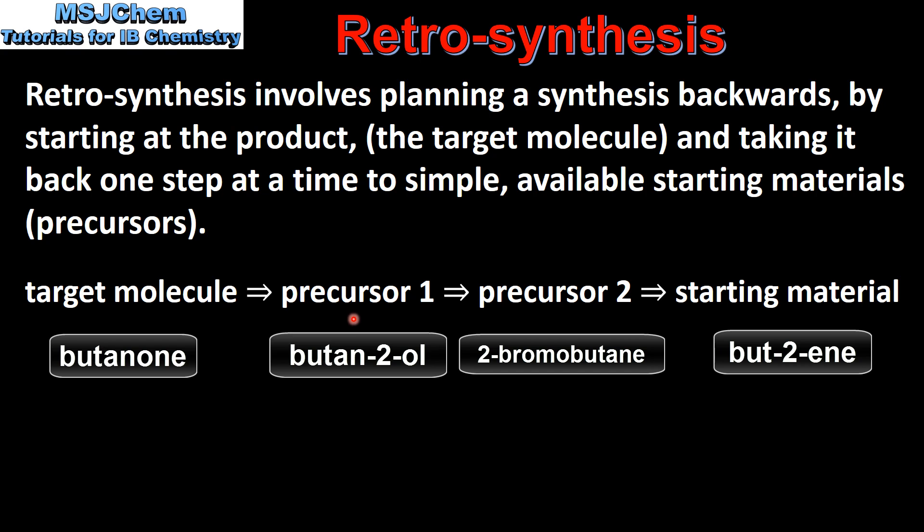In the previous example the target molecule was butanone and the starting material was an alkene. Precursor 1 was butan-2-ol and precursor 2 was 2-bromobutane.